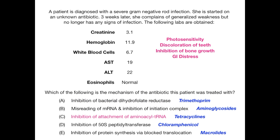For choice C, the mechanism for tetracyclines is inhibition of attachment of aminoacyl-tRNA. The classic adverse drug reactions are photosensitivity, discoloration of teeth, inhibition of bone growth, and GI distress. There's no evidence of any of these in the vignette or labs. Nothing points to tetracyclines, so we can effectively eliminate choice C.